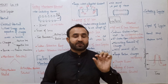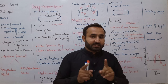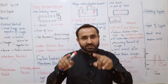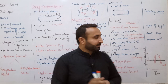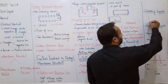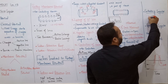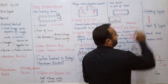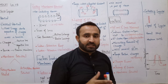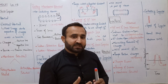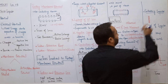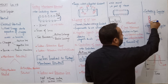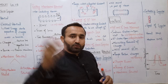Saltatory impulse - لفظ saltatory کا مطلب ہے jumping۔ Sensory اور motor neurons کے axons کے باہر myelin sheath ہوتی ہے اور myelin sheath کے درمیان nodes of Ranvier ہوتے ہیں۔ ان neurons کے axons میں nerve impulse saltatory یعنی jumping طریقے سے move کرتی ہے - ایک node of Ranvier سے اگلے تک، اگلے سے پھر اگلے تک jump کرتی ہوئی move کرتی ہے۔